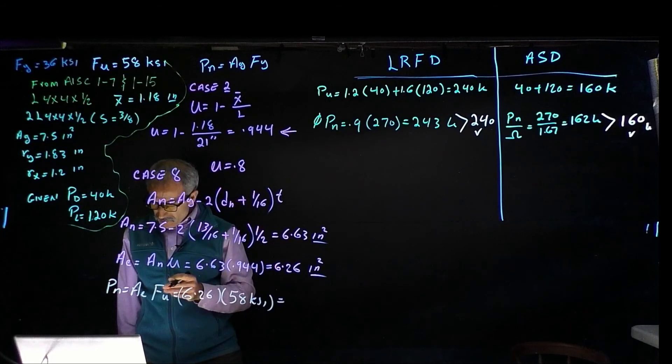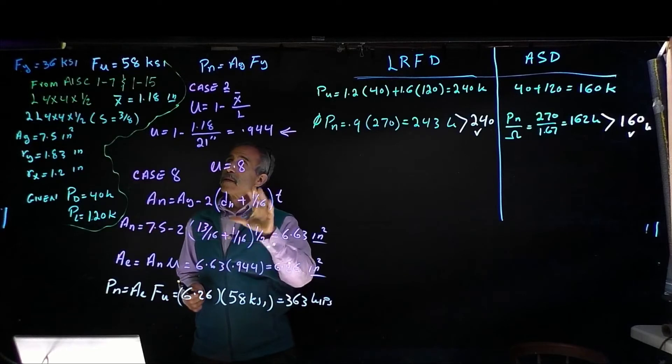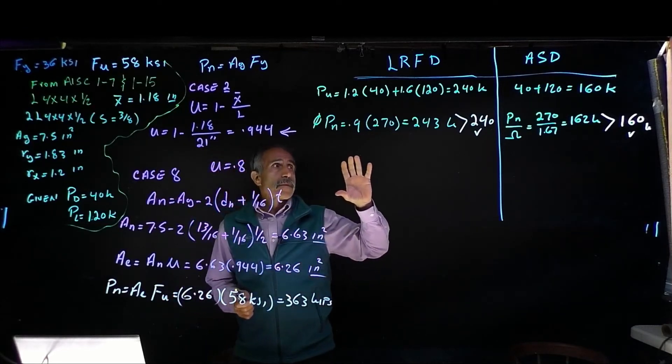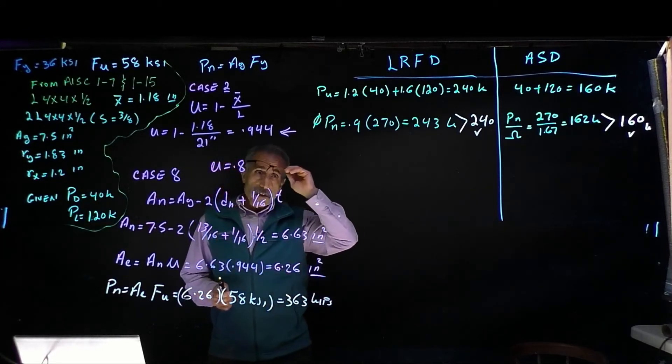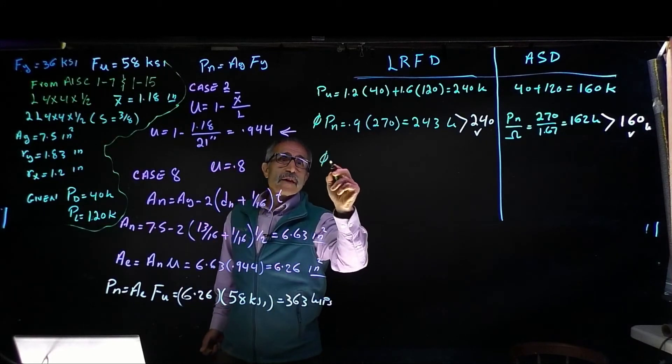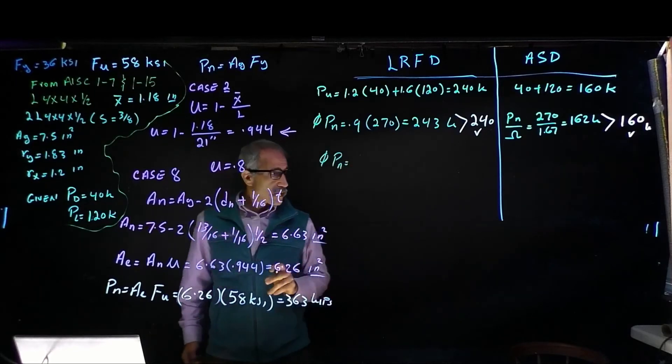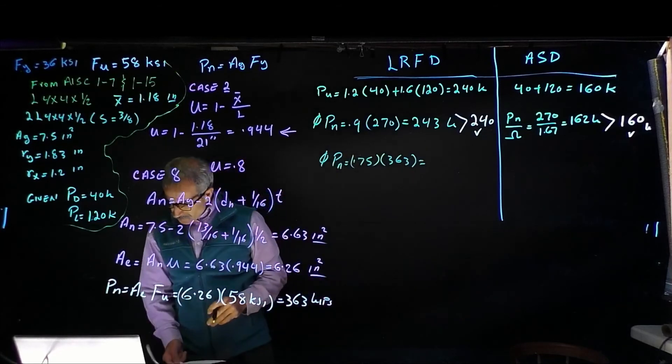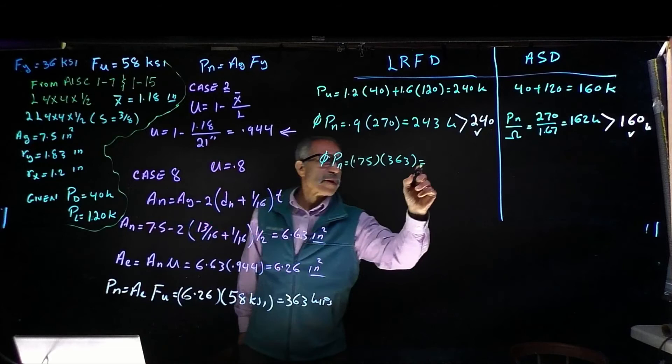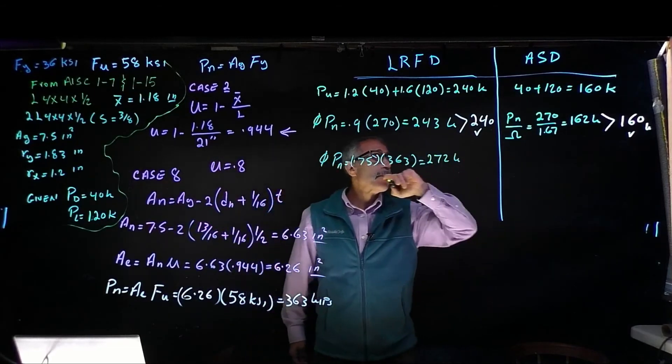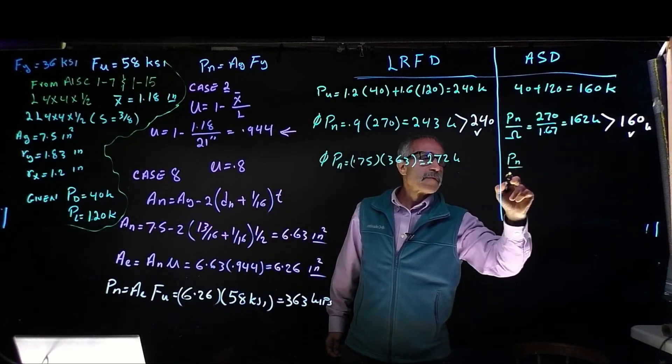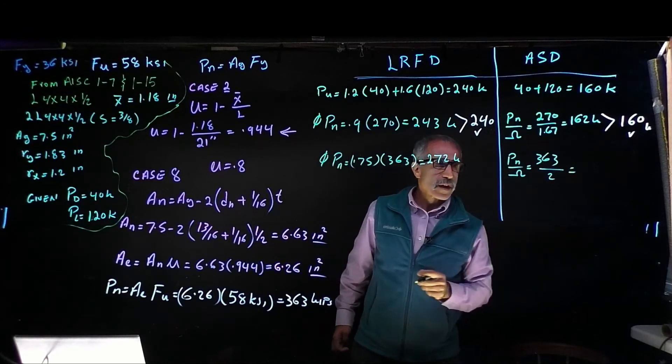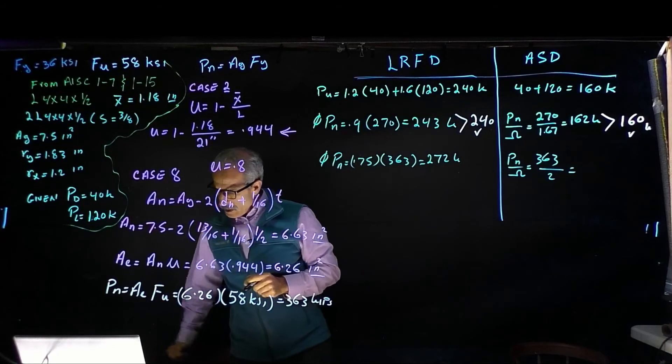We calculate the rupture: Pn equals Ae times Fu, which is 6.26 times 58 ksi, and that comes out to 363 kips. This is the capacity for rupture without any factor of safety. For LRFD, φPn equals 0.75 times 363, which gives 272 kips. For ASD, it's Pn divided by omega, which is 363 divided by 2.0, and that comes out to 182 kips.